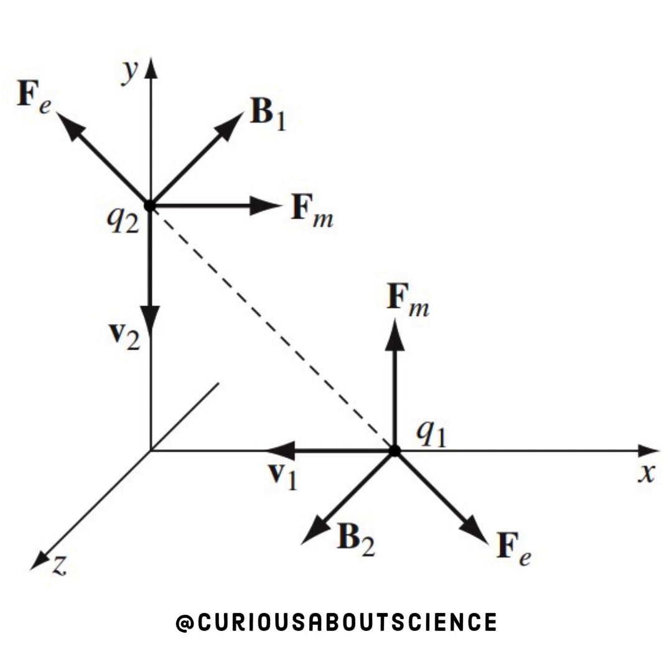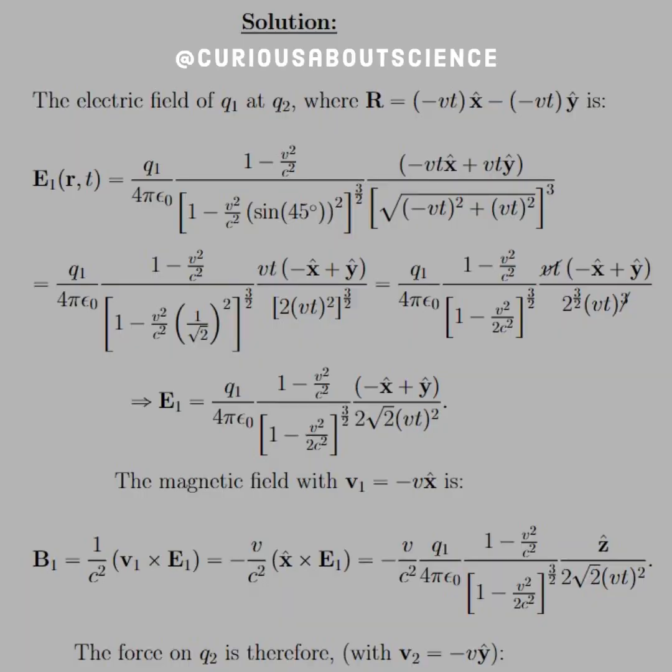This is the diagram they're referring to: Q1 on the x-axis at x equals negative Vt, Q2 on the y-axis at negative Vt. We see the correspondences here. Stare at that diagram as much as you need to. Let's get our hands dirty and see what we can do.